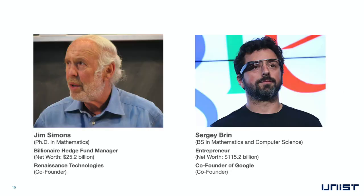Some of the most successful people in industry have a mathematics background or were mathematicians who moved into industry. For example, Jim Simons is a famous mathematician and mathematical physicist who discovered new ways of trading in finance. He is now a multi-billionaire who manages one of the most prestigious hedge funds in New York. And everyone probably knows Sergey Brin, co-founder of Google, who has a combined undergraduate degree in mathematics and computer science. So become the next Jim Simons or Sergey Brin and have a solid background in mathematics.